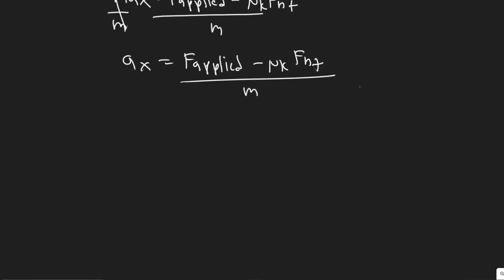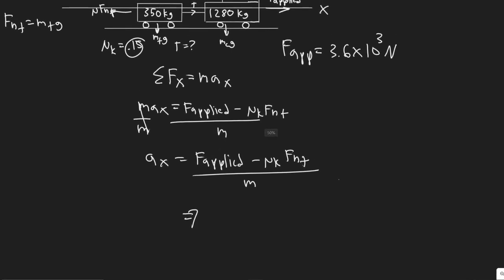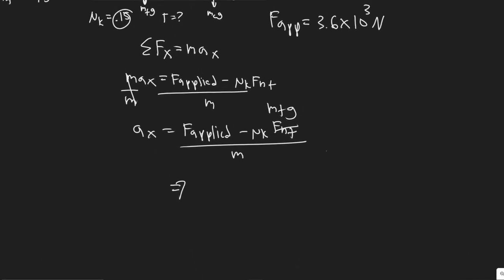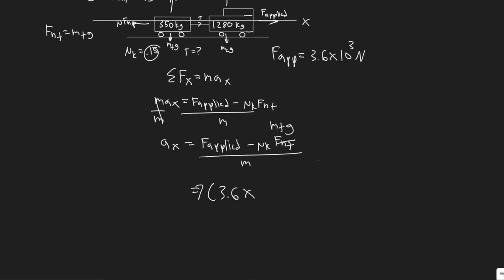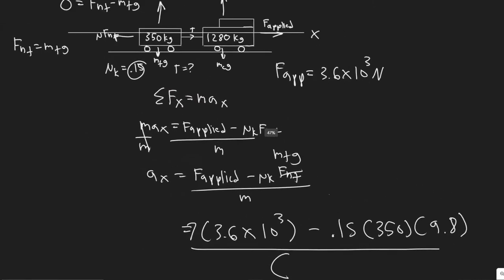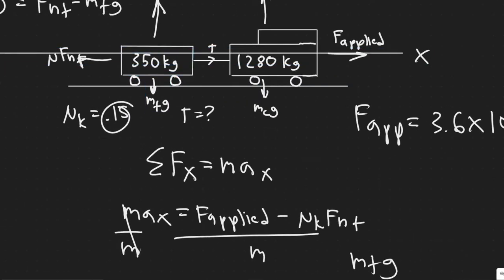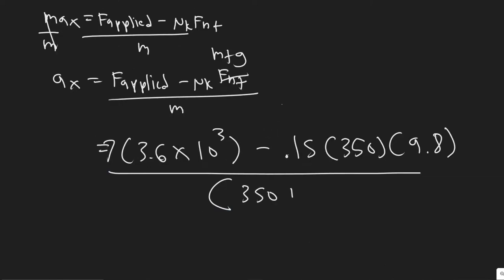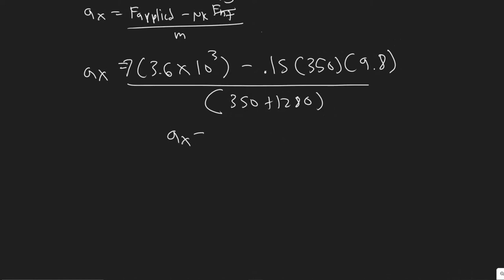Now we have everything to plug in. Rewriting with all values: the force applied is 3.6 times 10 to the 3, minus mu sub K of 0.15, times the mass of the trailer 350, times g. Divided by the total mass, which is 350 plus 1280. Plugging all this in, the acceleration in X is 1.8929 meters per second squared.